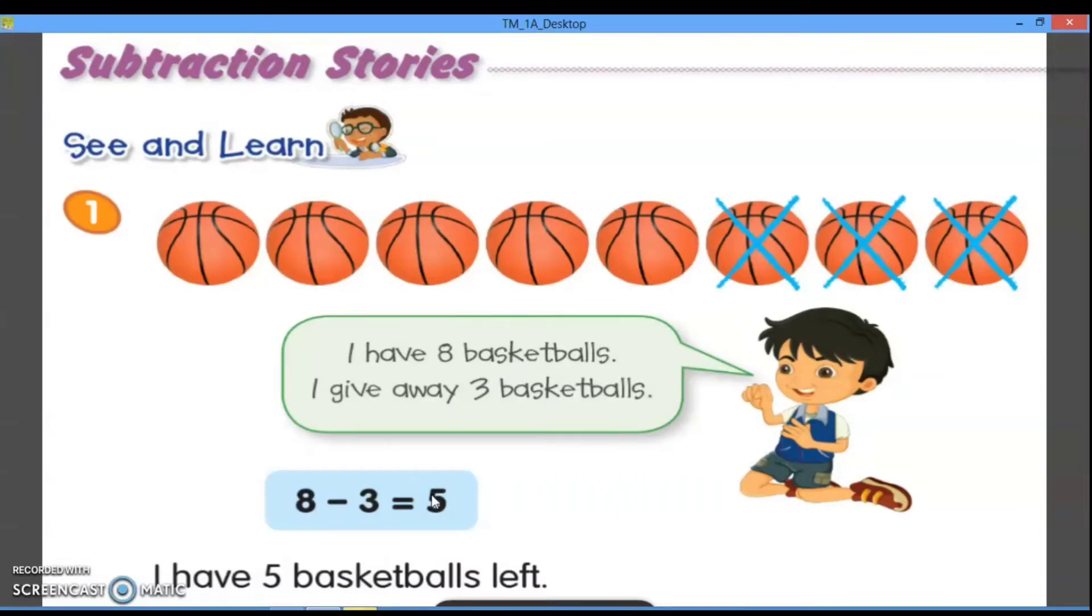Jadi, delapan adalah jumlah semua bola basketnya dikurang tiga. Karena tadi sudah diberikan ke orang lain, maka basketnya dikurangi. Tiganya, bola basket yang diberikan kepada orang lain, dan hasilnya adalah lima. Nah jadi, sisa bola basket Rafi adalah lima. I have five basketballs left. Jadi, aku mempunyai lima basketballs atau lima bola basket yang tersisa.